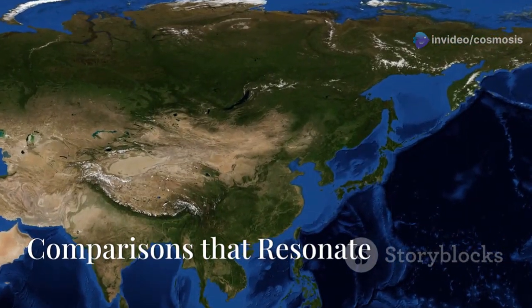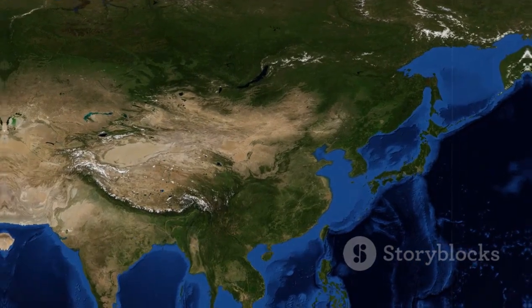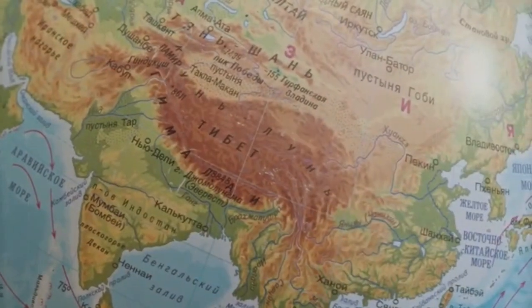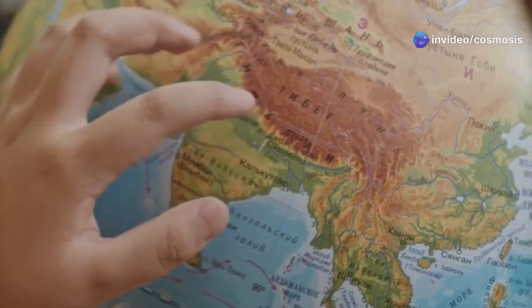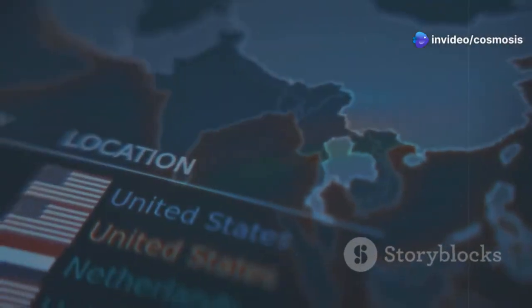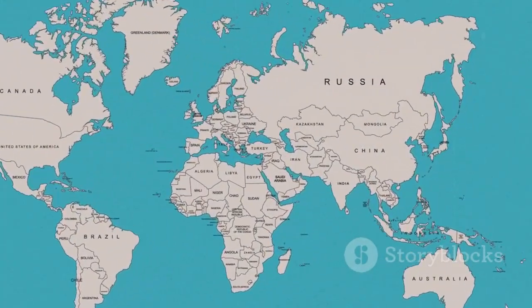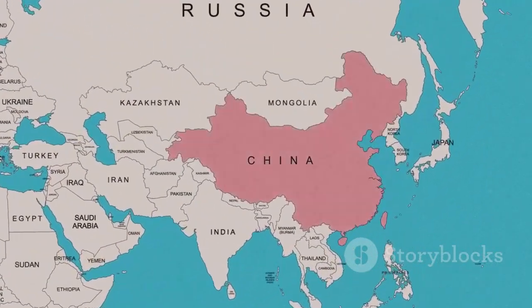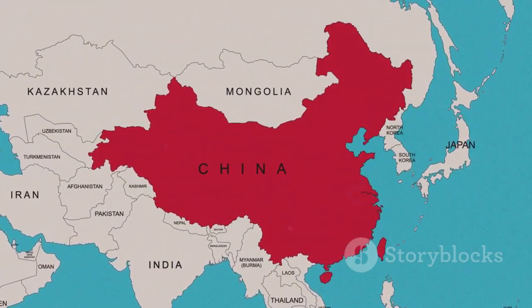The sheer size of China can be difficult to comprehend simply by looking at a map. To truly grasp its vastness, it's helpful to draw comparisons to more familiar areas. For instance, China is larger than the contiguous United States, stretching from the Atlantic to the Pacific Ocean. If China were superimposed on a map of Europe, it would stretch from Portugal in the west all the way to Moscow in the east.